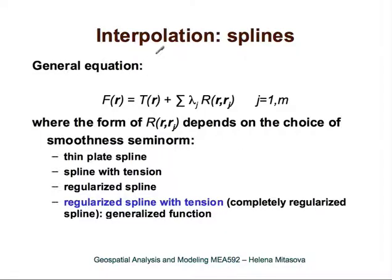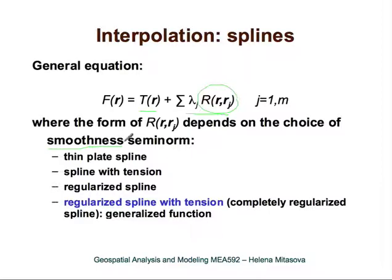The general equation of spline interpolation methods is our general equation. This means the interpolation function is a sum of a trend and a weighted sum of functions that depend on distance. The form of this function depends on the choice of smoothness seminorm, so depending on the measure of smoothness or roughness of the surface, we can get different types of splines.